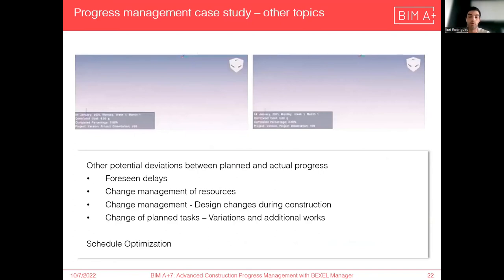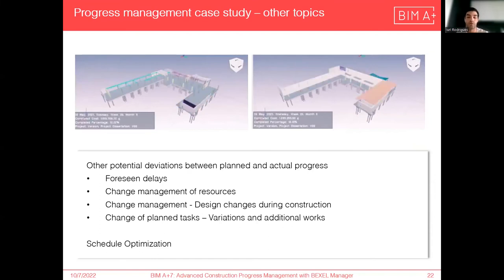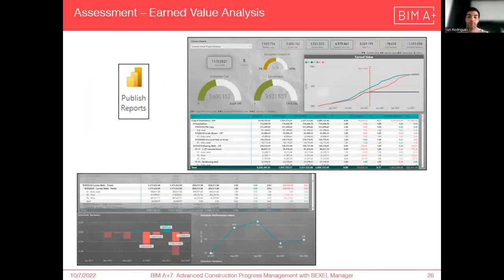These were other causes of deviations during the construction that were explored, such as design changes during construction or additional works and variations. On the top, we can see the comparison between the actual and planned progress via construction simulations with percentage of completion and total costs flow. After updating the schedule and costs, the software enables the automated creation of monthly payment certificates and progress reports for communication. The project performance can also be analyzed through Power BI at the work packages or activities level, enabling detailed visualization of performance and better decision making.